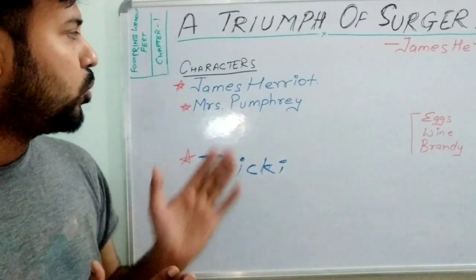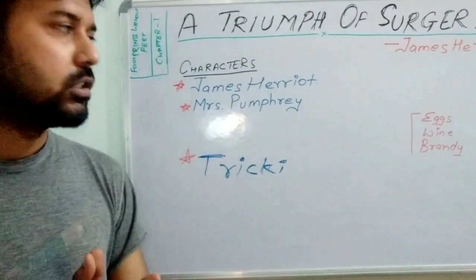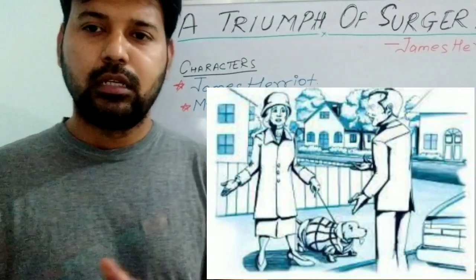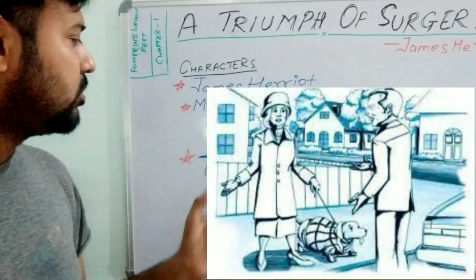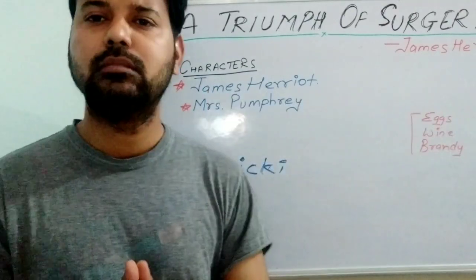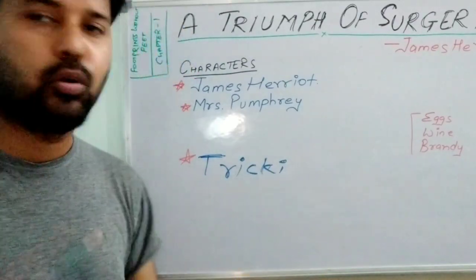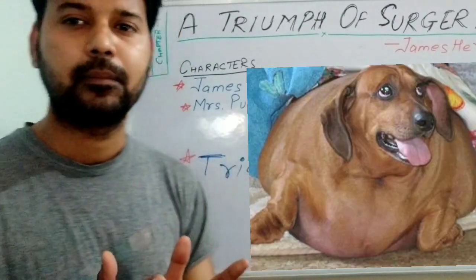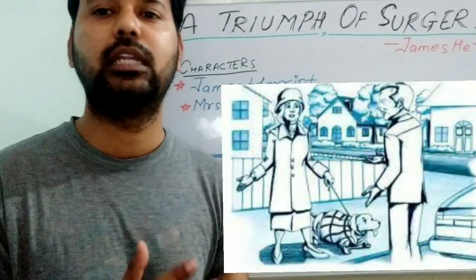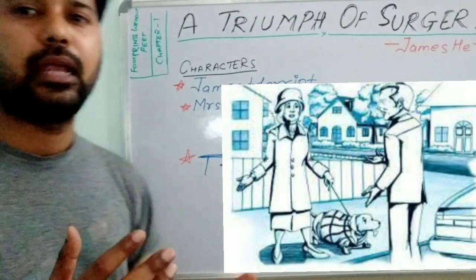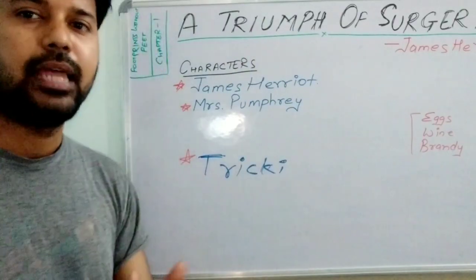One day, when James Herriot was going in his car, he saw Mrs. Pumphrey taking Tricky for a walk. Seeing the dog, Herriot became very amazed — the dog was very small but had become very fat. At that time he stopped and asked Mrs. Pumphrey whether she was not taking care of the dog and not following the advice James Herriot had already given her.